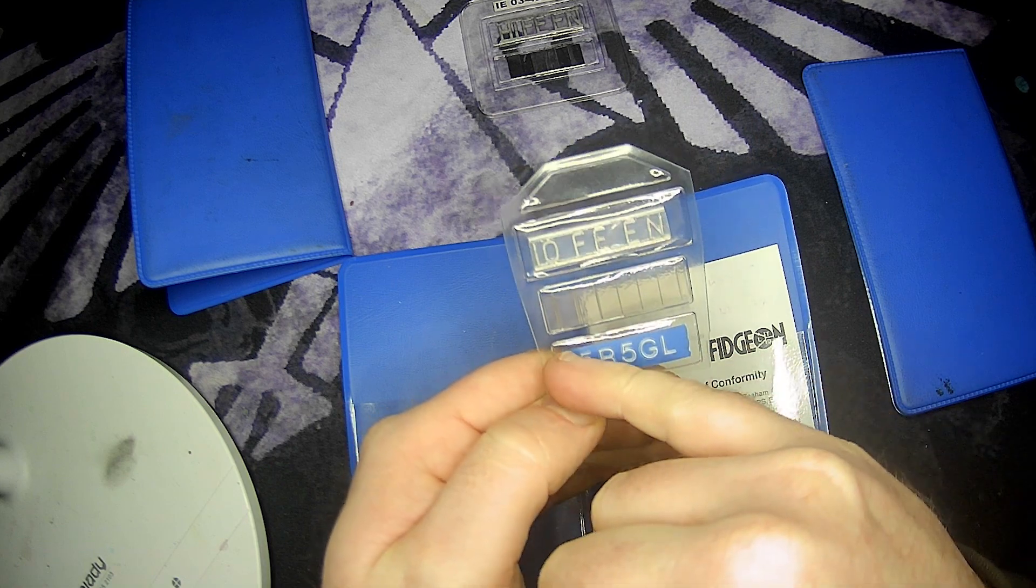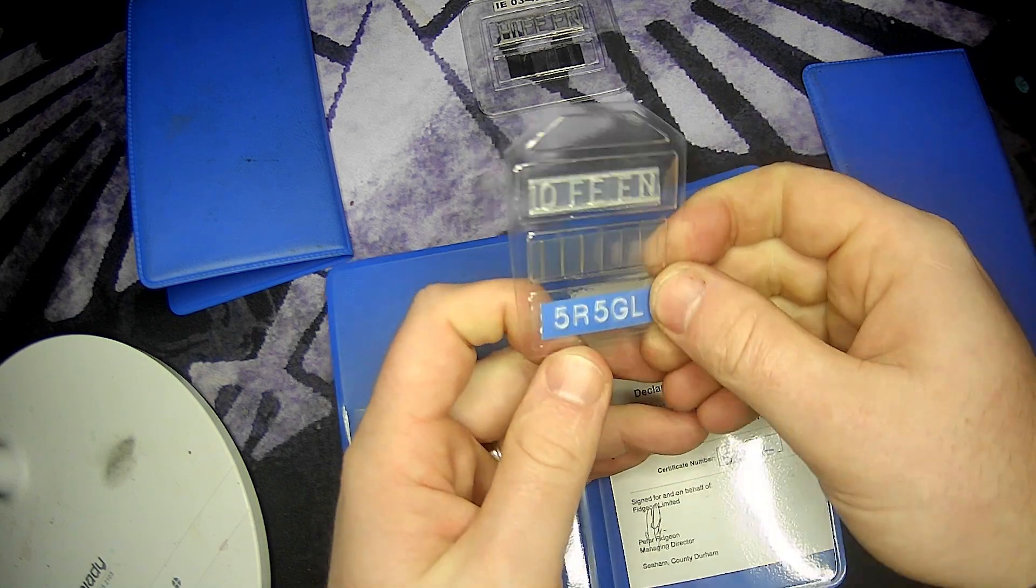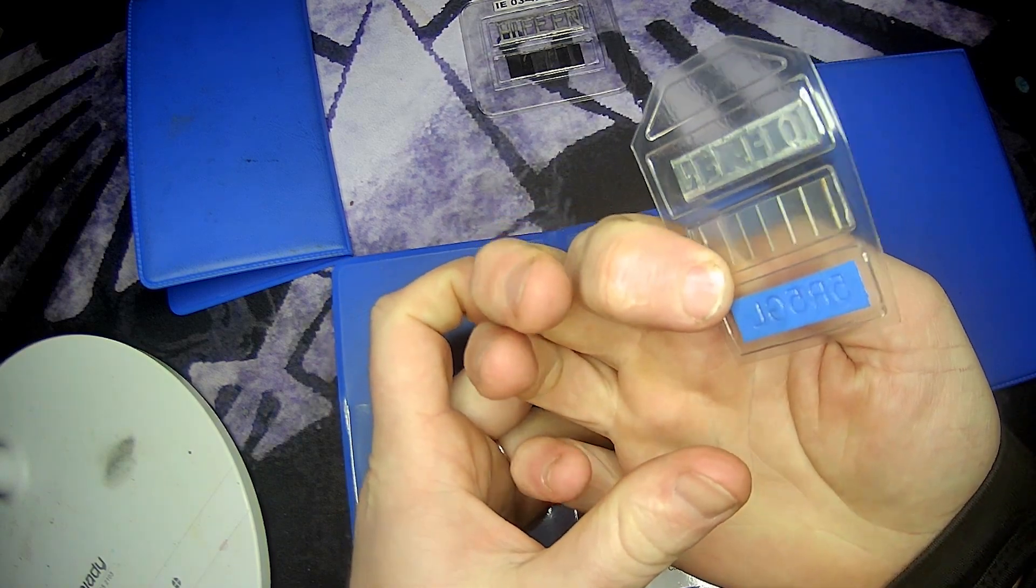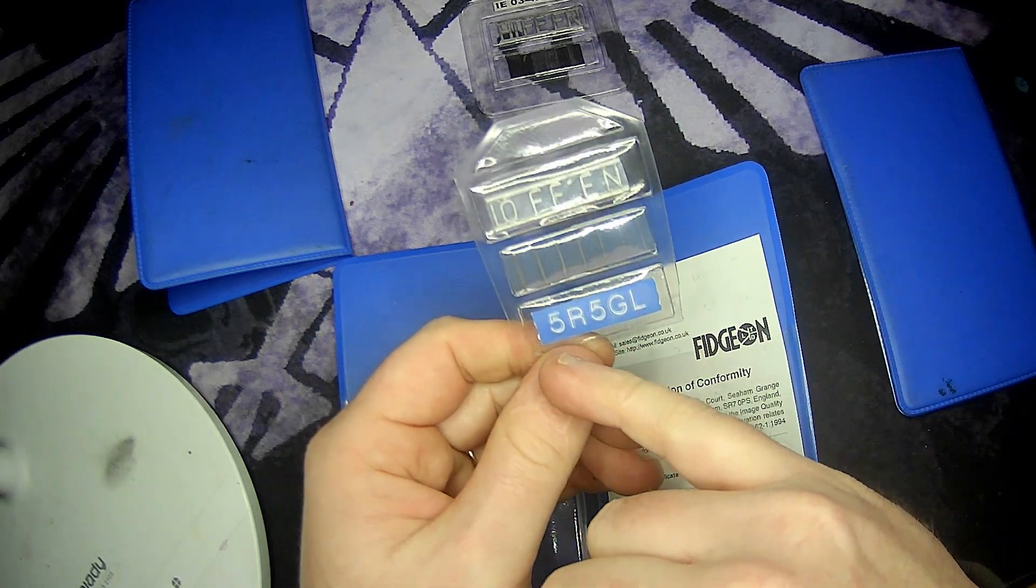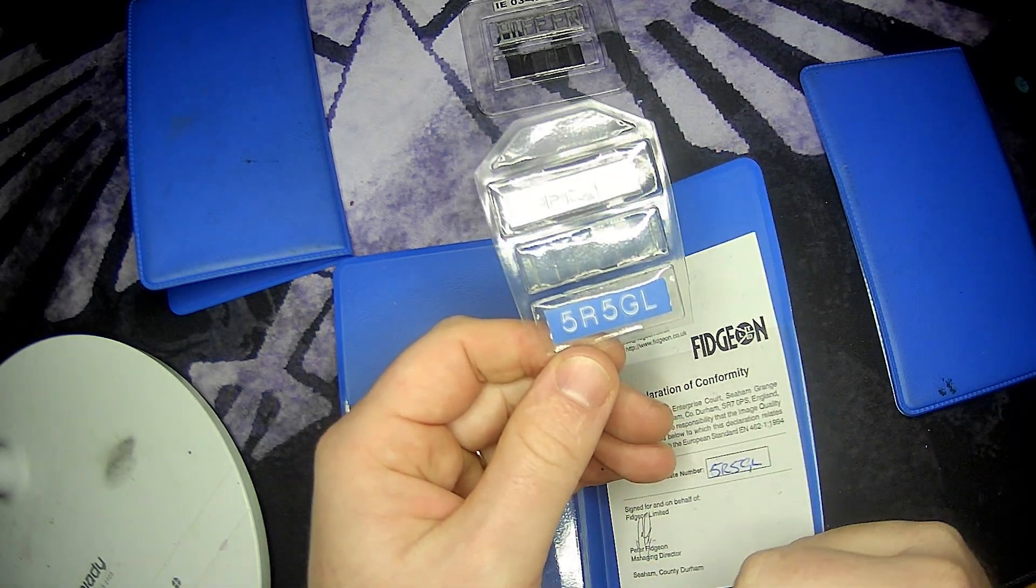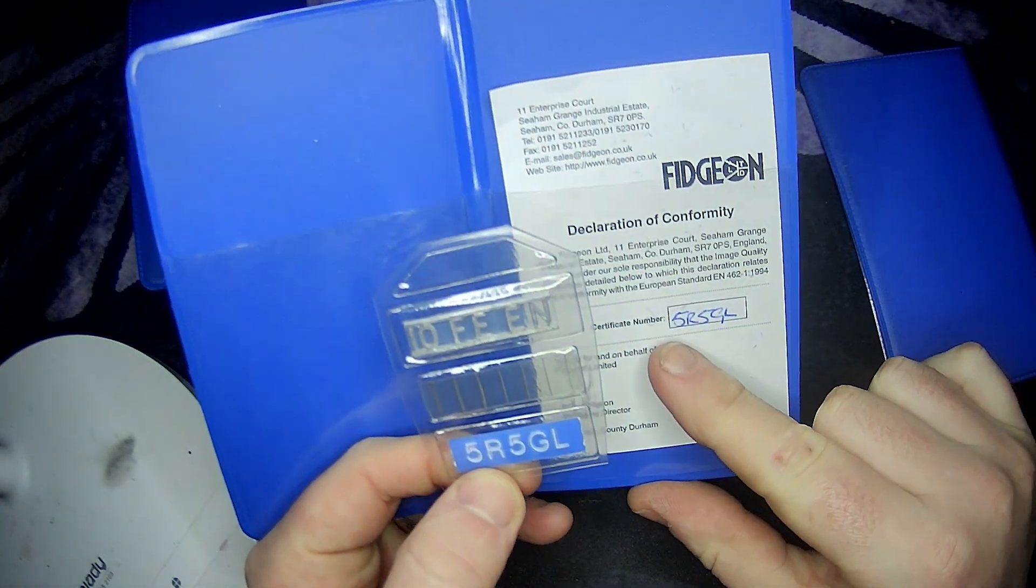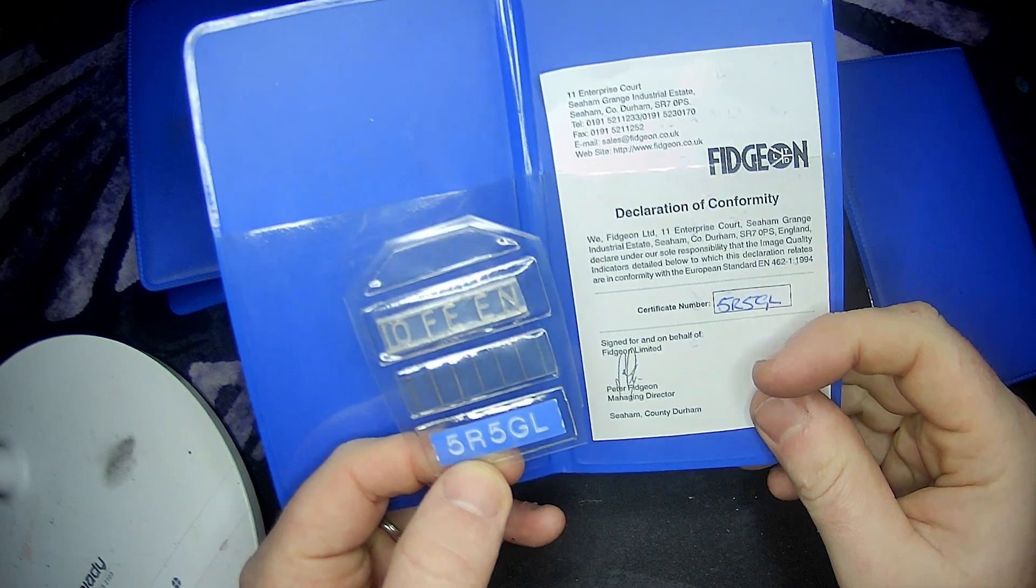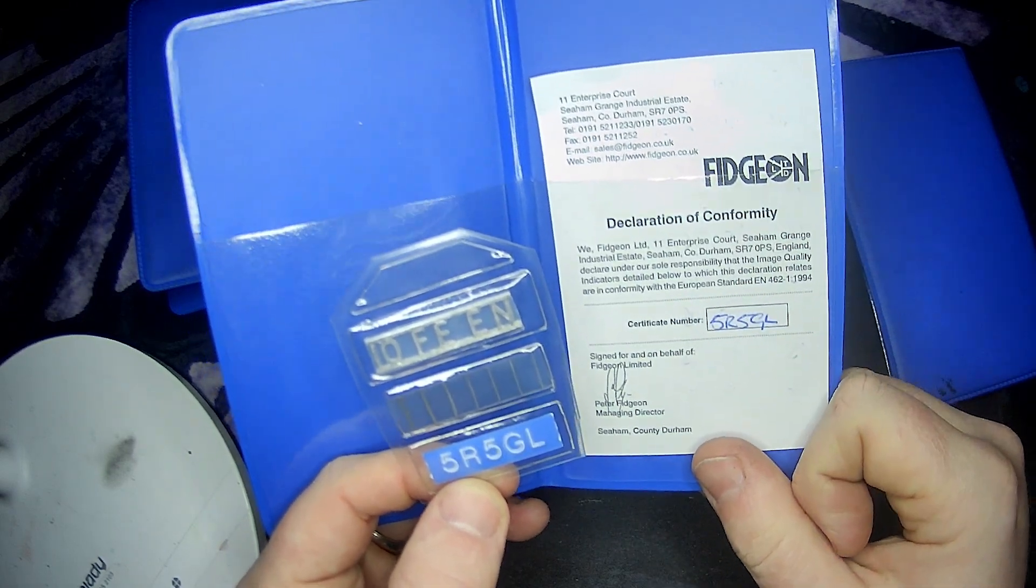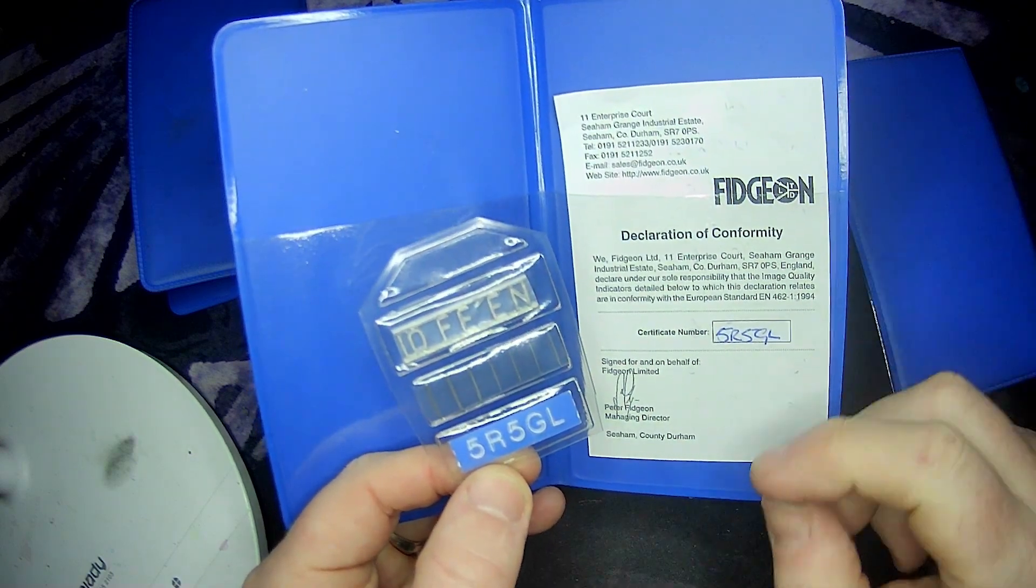I've then got this ticker tape sort of impressed thing, which is also inside the plastic packet as well. It's not just stuck on. It's in there, which is 5R5GL. And if you look inside the box here, you can see we've got 5R5GL for the declaration of conformity. So they're almost like the calibration cert type thing that says this is in line with the standard.